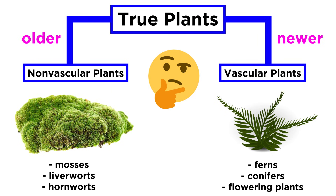Now that we know the basic differences between vascular and non-vascular land plants, let's use the next few tutorials to take a closer look at these groups and specific types of plants within them, so that we can understand their structures and their reproductive systems, as well as how these different capabilities arose from an evolutionary perspective.